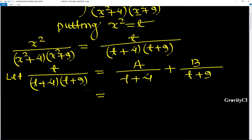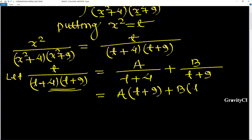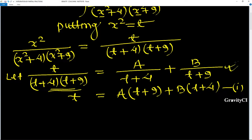Taking LCM of both sides, the numerator will be A(t+9) + B(t+4). We cancel the denominators on both sides. Now we will find the values of A and B and put them here.